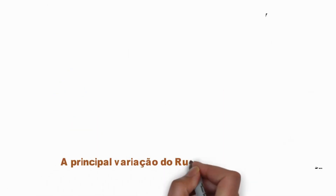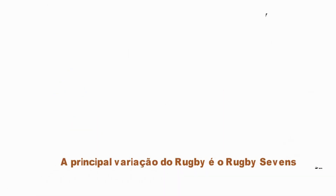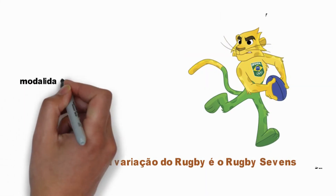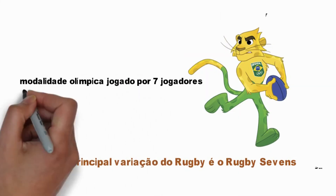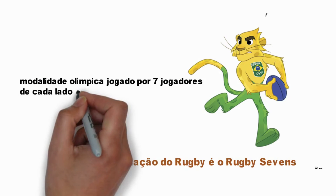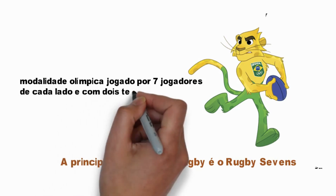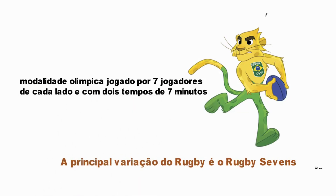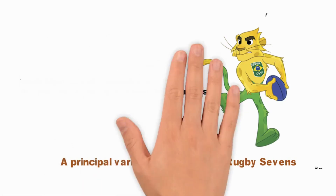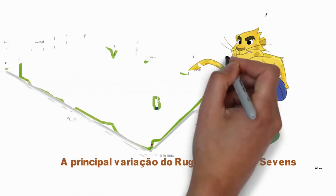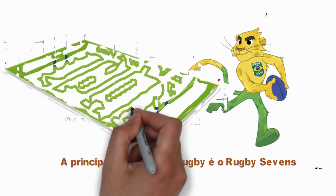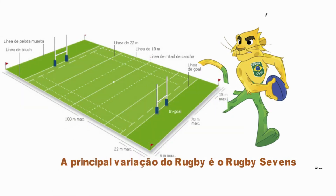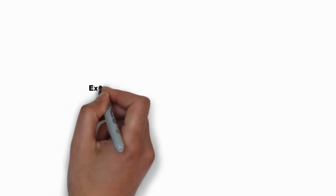A principal variação do rugby é o Rugby Sevens, modalidade olímpica, jogada por duas equipes de 7 jogadores para cada lado, com dois tempos de 7 minutos. Tanto o rugby como o Rugby Sevens são praticados em um campo com as mesmas dimensões de um campo de futebol, mas com marcações diferentes.